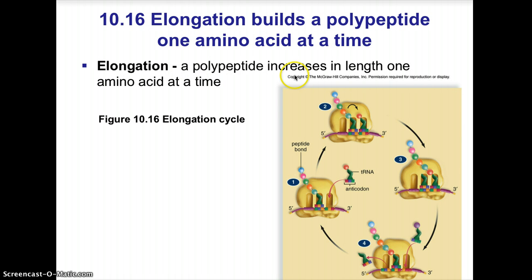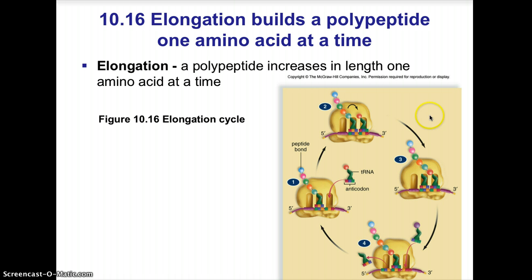During elongation, a polypeptide increases in length one amino acid at a time. Here you can see that primary structure of a protein being built, with each amino acid represented by a different colored sphere. The bond between those adjoining amino acids is a peptide bond, formed after a dehydration synthesis reaction.